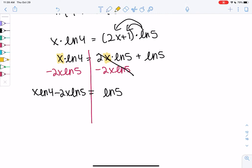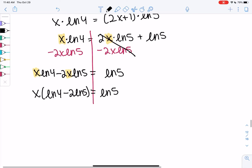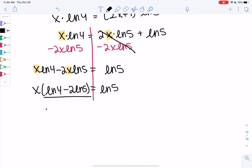And then if we factor the x out, we can solve. So x times ln of 4 minus 2ln of 5, so ln of 4 minus 2ln of 5, and then equals ln of 5. And we'll just divide by all of that. So divide by ln of 4 minus 2ln of 5.